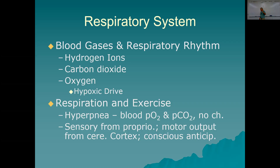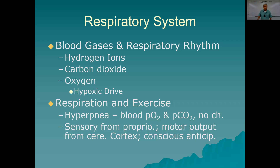Respiration exercise: hyperpnea — deeper breathing. When you're exercising, you naturally go into hyperpnea because of sensory information from proprioceptors. When you start moving your arms and legs a lot, the proprioceptors send information to the DRG. The DRG sends information to the VRG saying we've got to breathe more deeply.